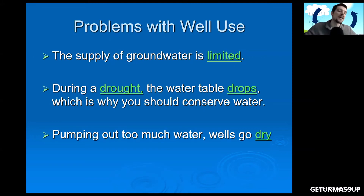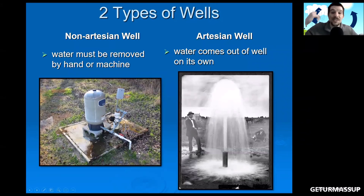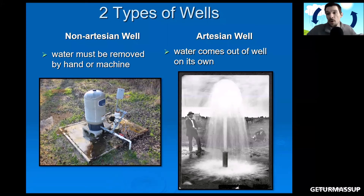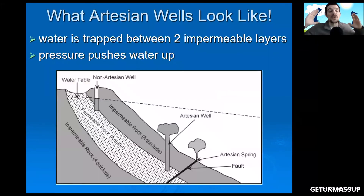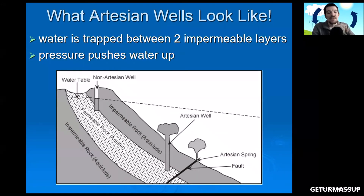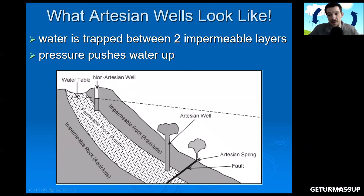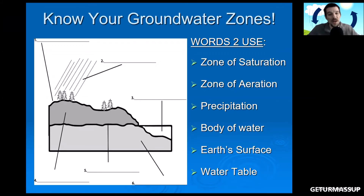There are two types of wells: non-artesian wells and artesian wells. In a non-artesian well, water must be removed by hand or machine. Artesian wells are different — the water pumps out on its own because it is trapped between two impermeable layers that act like a vice, squeezing the water out. You don't have to do anything — the pressure from all that water causes the artesian well to erupt on its own.